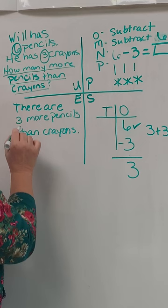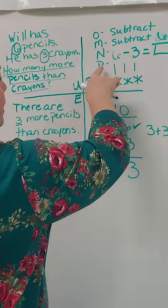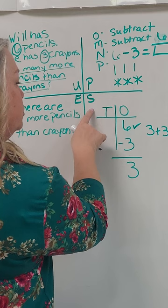So we have done our understanding portion. We've done the planning, everything over here, the O, M, N, and P. Okay, our operation, method, number of sentence, and our plan, our solution, or our solving of the problem, and our evaluation of the whole problem.